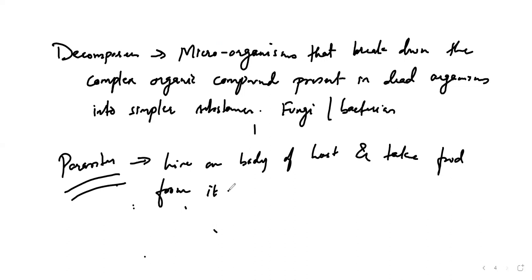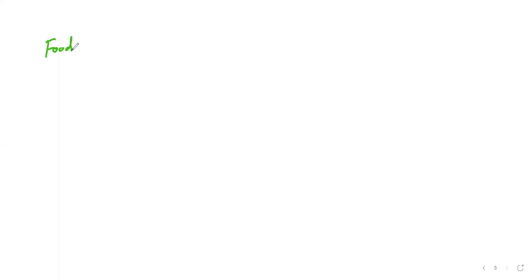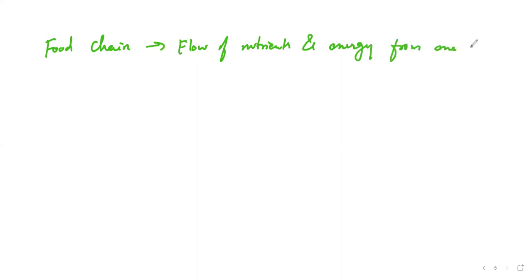All of this together forms something called a food chain. Depending upon the flow of nutrition, these categories are there — producers, consumers, and decomposers. Food chain means nothing but the flow of nutrients and energy from one organism to another at different trophic levels.